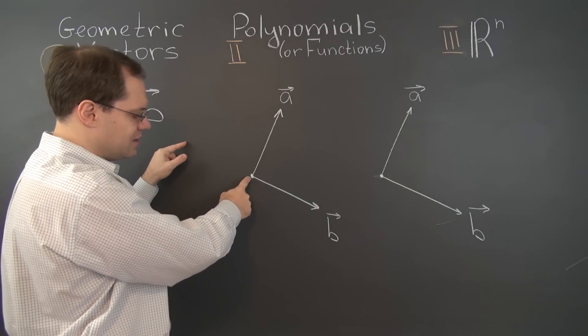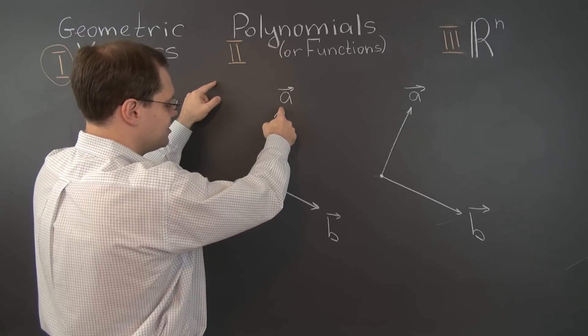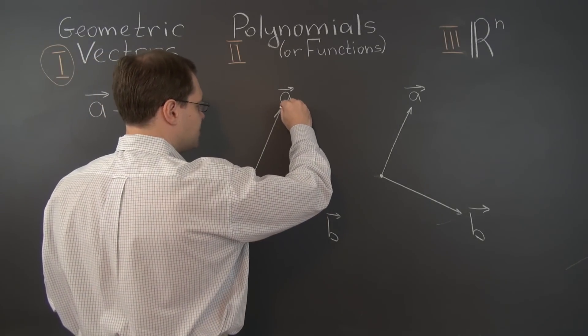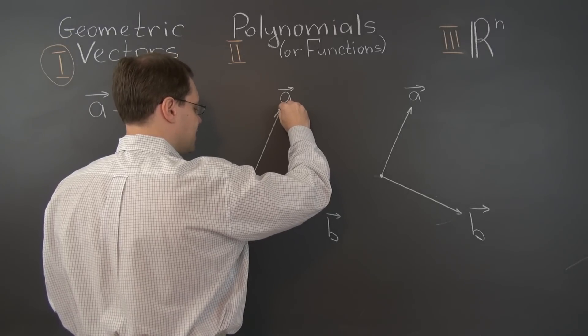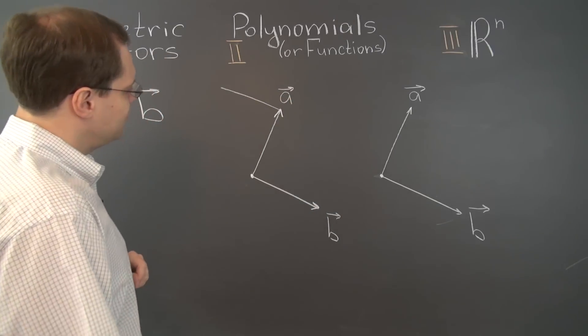But I won't draw it here because I prefer the tip-to-tail rule. So I will actually draw it at the tip of the vector A. So according to the first approach, you simply draw minus B, which is a vector whose length is the same as B and the direction is opposite.